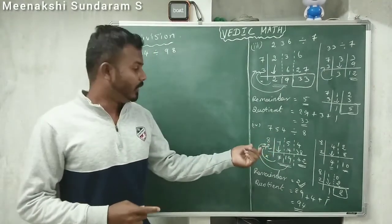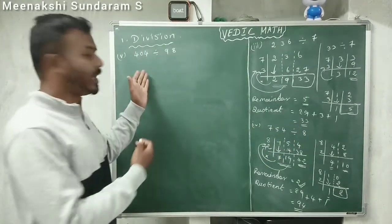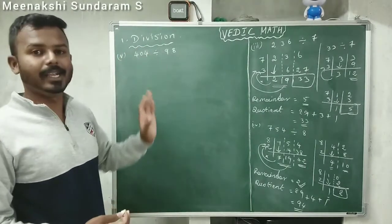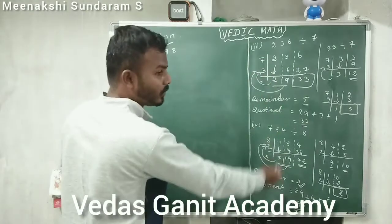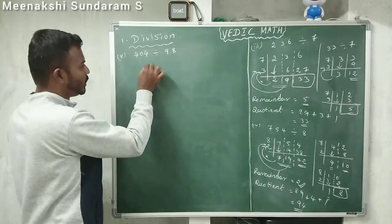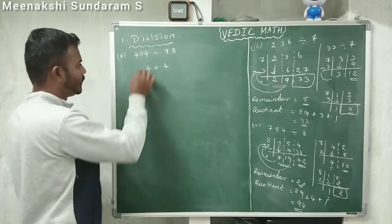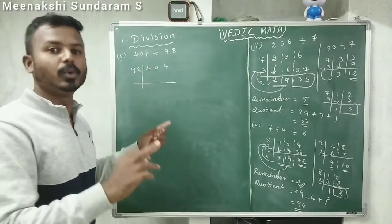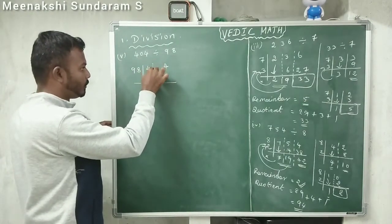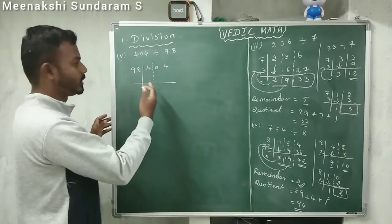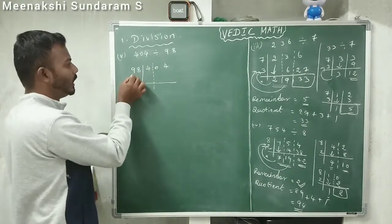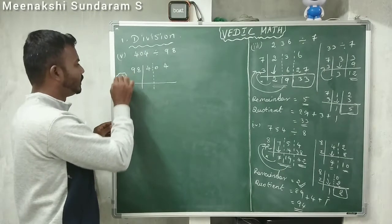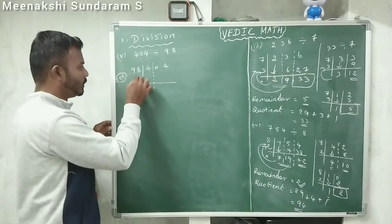Up to the 4th problem we used the divisor as a single digit. Now, problem number 5, we go with a 2-digit divisor: 404 divided by 98. Same procedure. Write 404, divide by 98. Since the divisor is 2 digits, pair the number by groups of 2 from the back. 98 is closer to 100 — the base number is 100. How much do I add to 98 to make 100? That is 2 — write a 2 here.